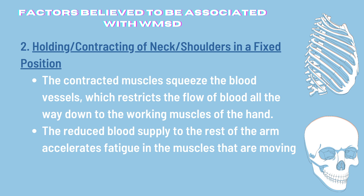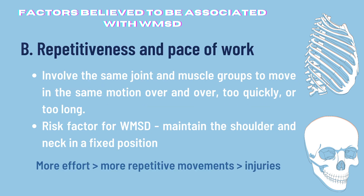Number two is holding or contracting the neck or shoulders in a fixed position. The contracted muscles squeeze the blood vessels, which restricts the flow of blood down to the working muscles of the hand. As a result, the neck or shoulder become overtired, and the reduced blood supply to the rest of the arm accelerates fatigue in the muscles, making them more prone to injury. The next factor is the repetitiveness and pace of work. Repetitive movements involve the same joint and muscle groups moving in the same motion over and over, too quickly or too long. Tasks with repetitive movements are a risk factor for WMSD because a person has to maintain the shoulder and neck in a fixed position to exert some force.